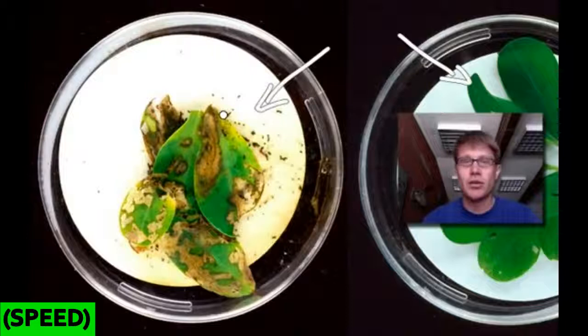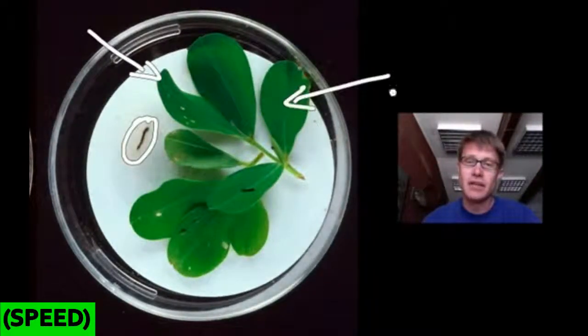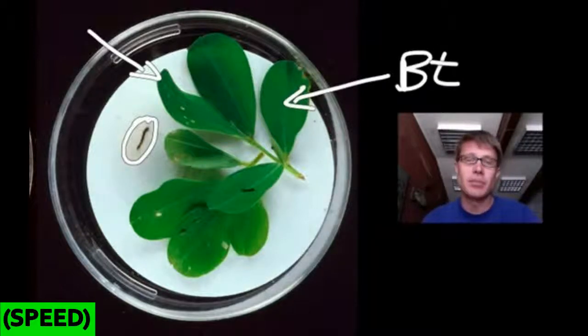On the left side it's being decimated by the larvae from a corn stalk borer. The one on the right, however, you can see the borer sitting right here, but it's not eating the peanut. And the reason why is this one over here has been engineered. They've actually added a gene from a bacteria called Bacillus thuringiensis, and it produces a toxin that the larvae doesn't like, so it takes a couple bites then quits eating it.